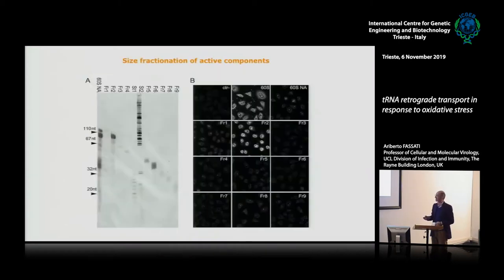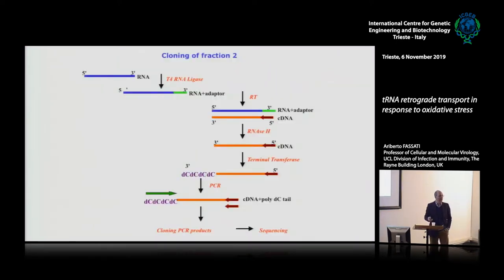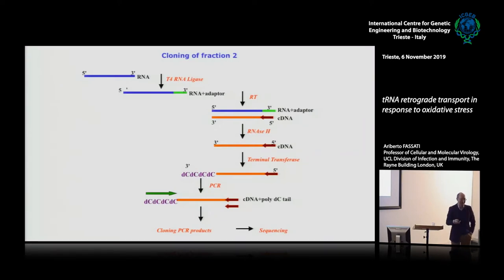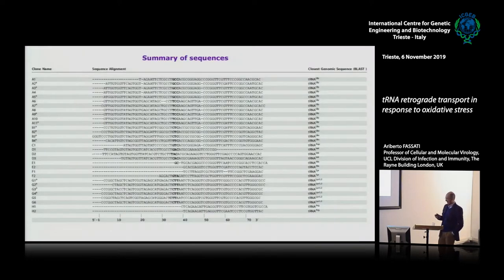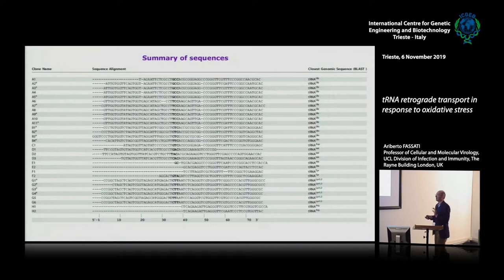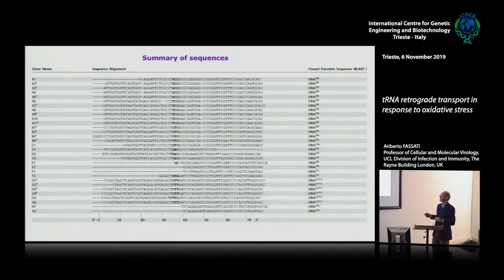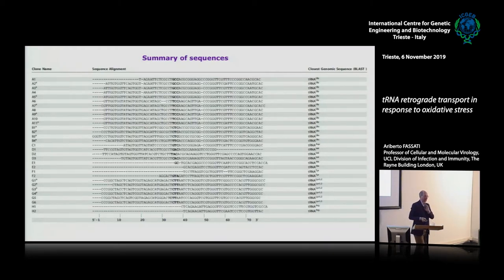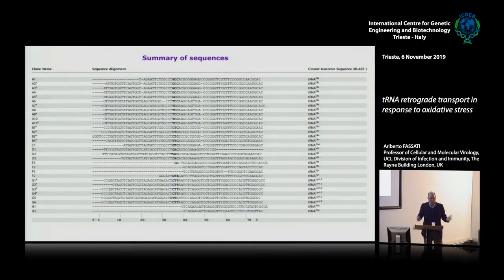We decided to clone what was clearly RNA of about 70 to 80 nucleotides. We cloned about 100 of them, sequenced them, and did a BLAST search. They all came back as tRNAs. To be honest, at the beginning we really thought these were contaminants — we must be missing the real active stuff. But the more we cloned, the more tRNAs came out.